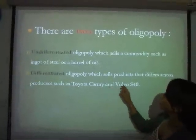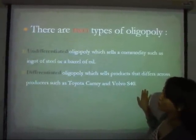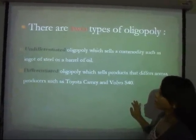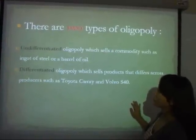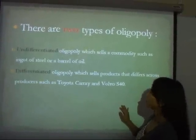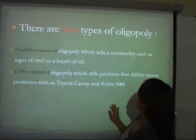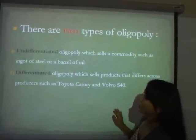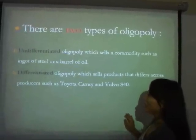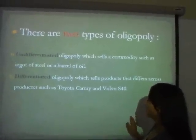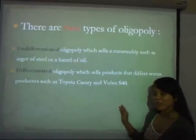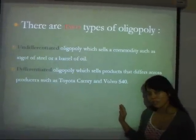There are two types of oligopoly: undifferentiated and differentiated. Undifferentiated oligopoly means firms sell the same commodity, such as bars of steel or barrels of oil. Differentiated oligopoly sells products that differ across producers, such as in the mobile phone industry.